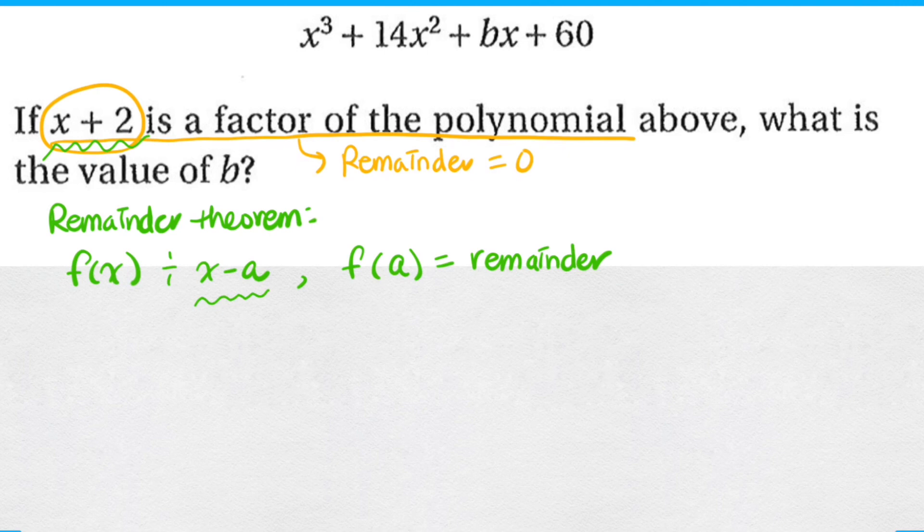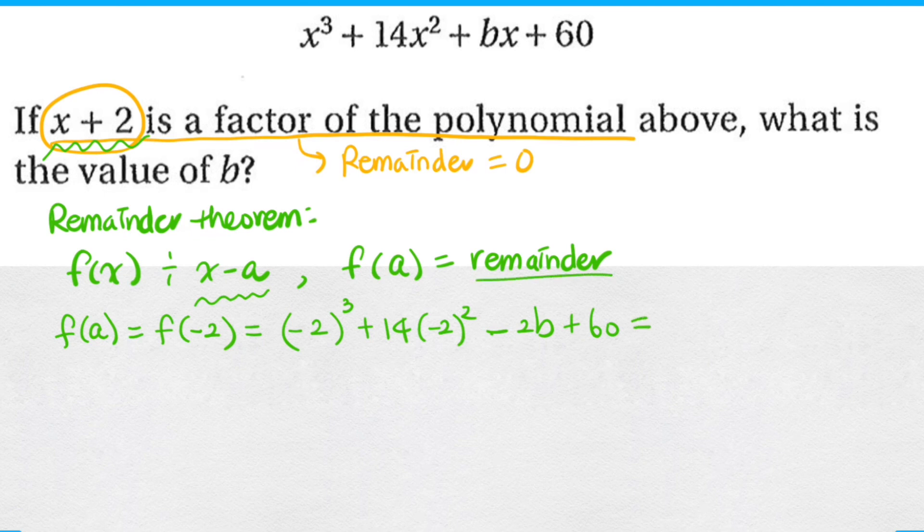So in order to find f of a, we can simply find f of negative 2 by plugging in negative 2 into x of the polynomial. Now once again, that should be equivalent to the remainder, which is equal to 0.